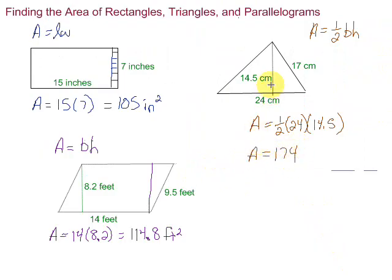So, the area of this triangle is 174 centimeters squared. Because we're talking about, again, how many little squares, one centimeter by one centimeter, would it take to fill this whole area.